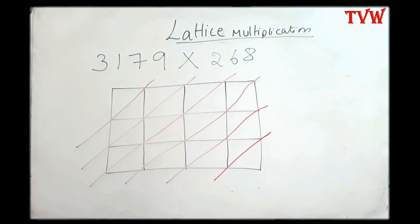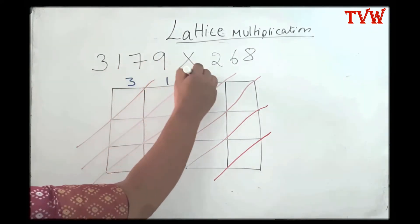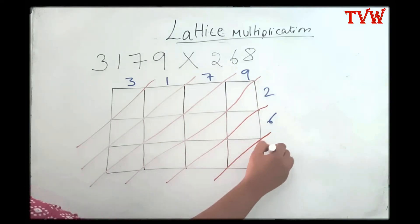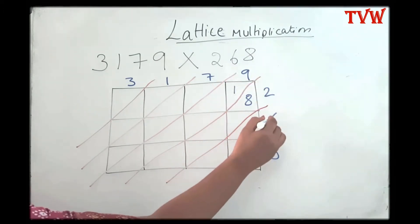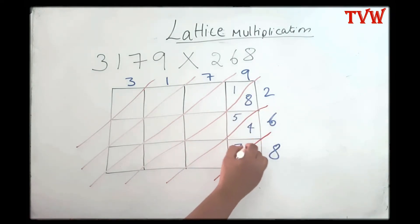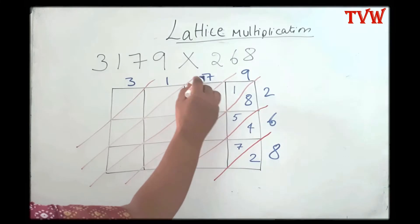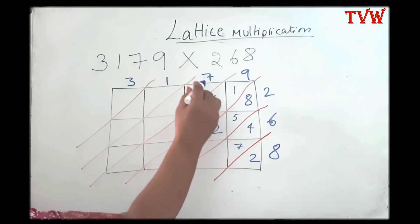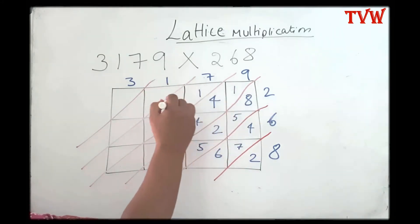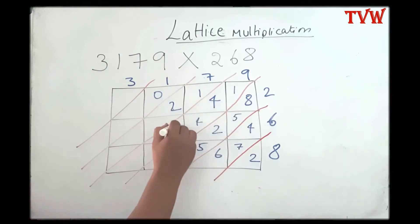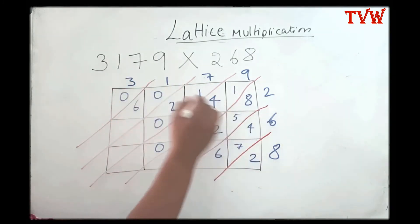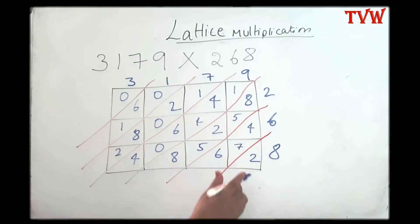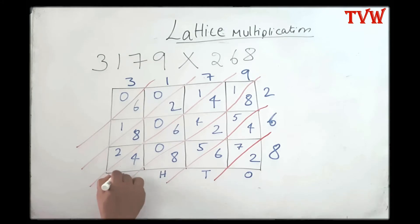I have divided all the boxes into triangles using slanting lines. Now let us write the numbers: 3, 1, 7, 9 and 2, 6, 8. Now let us start multiplying: nine twos are eighteen, nine sixes are fifty-four, nine eights are seventy-two, seven twos are fourteen, seven sixes are forty-two, seven eights are fifty-six, one two is two, one six is six, one eight is eight, three twos are six, three sixes are eighteen, three eights are twenty-four.